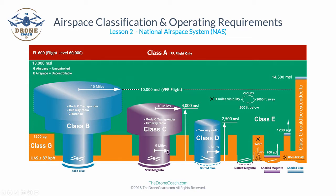Class C airspace is denoted in magenta. It extends about five miles from the center of the airport; the second shelf begins at roughly 1,200 feet MSL and extends upward to 4,000 feet MSL. The center of Class C controlled airspace typically extends 10 miles from the center of the airport.